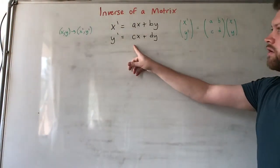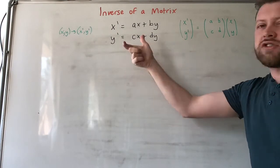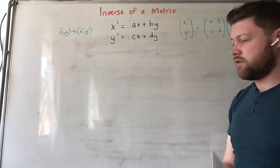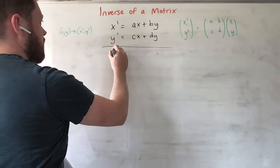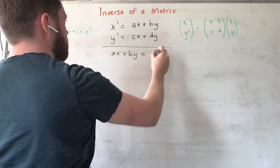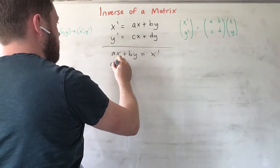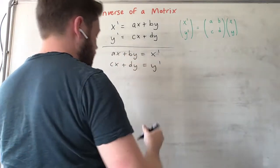What we can do is take our two equations here and switch them around to make things easier. If we switch these around we get ax + by = x' and cx + dy = y'.